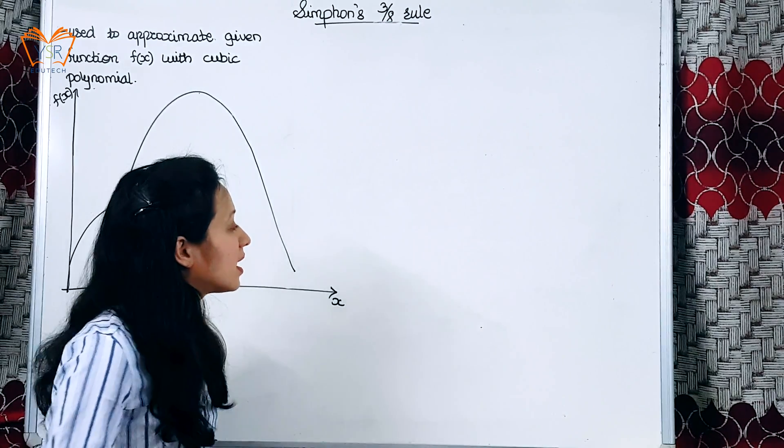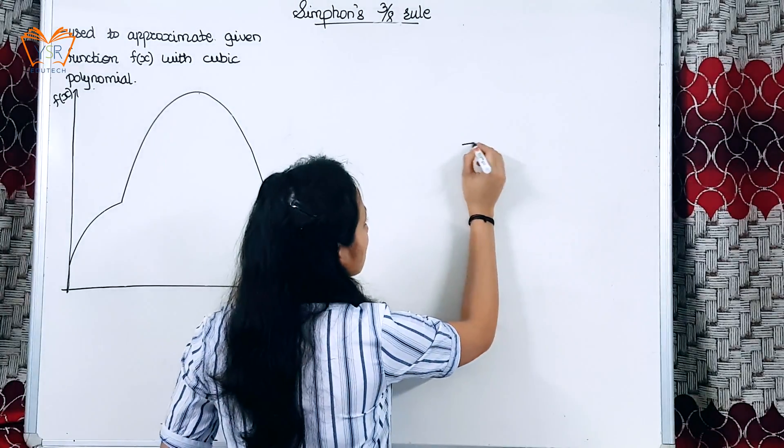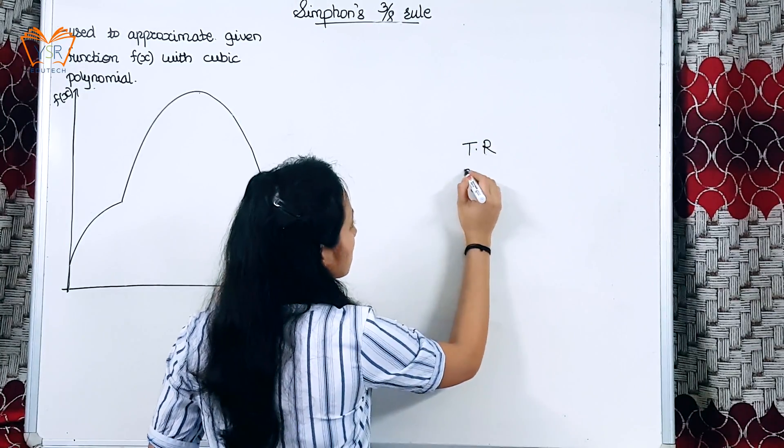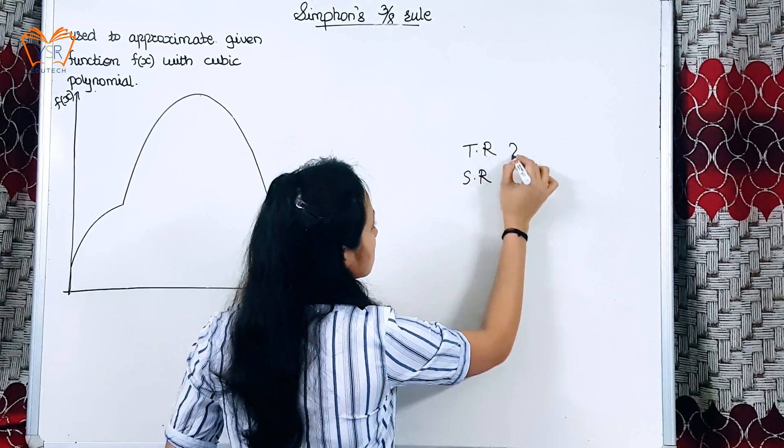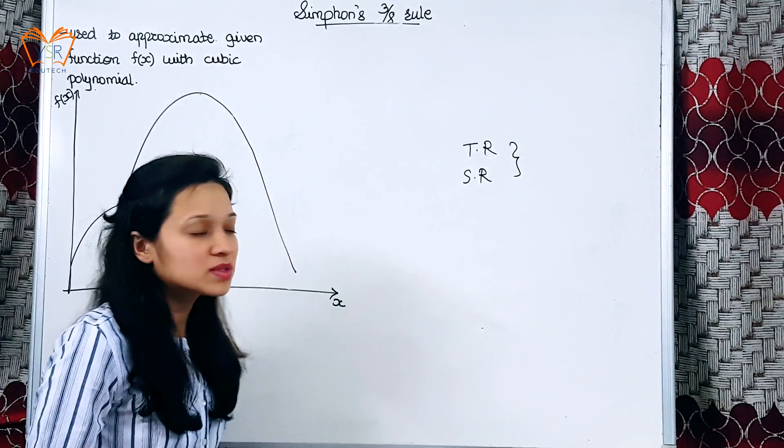Hey guys, I am Sudhabha. As we studied previously, there are two methods that can be used to find out the value of integration: Trapezoidal Rule and Simpson's Rule.